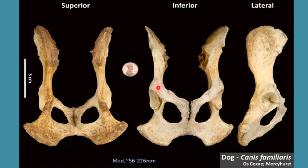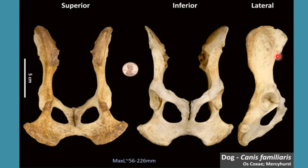The ventral border of ilium contains two spines: the cranial ventral ilium spine and the caudal ventral ilium spine. The cranial ventral ilium spine is the angle of junction between the ilium crest and this ventral border. The rest of the ventral border is concave in shape. So this ventral border is concave while cranially it contains these two spines.